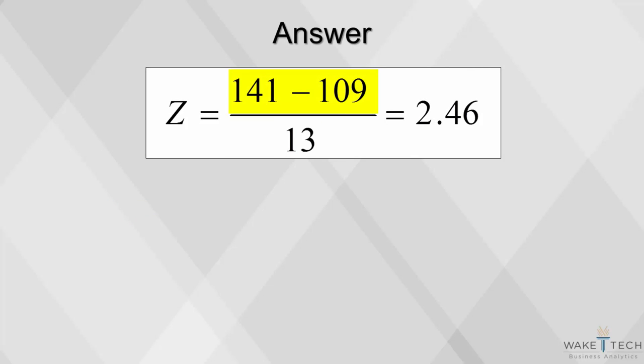Here's how we solve this problem. We subtract 109, our mean, from 141, and then divide by our standard deviation, 13. So z equals 2.46.